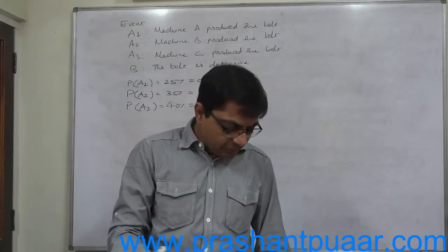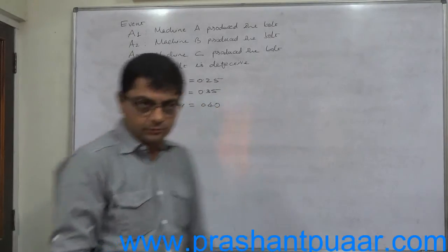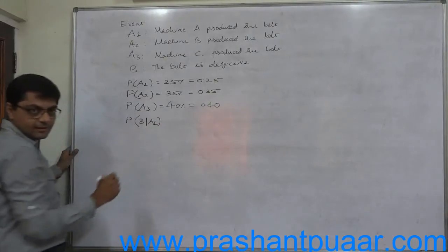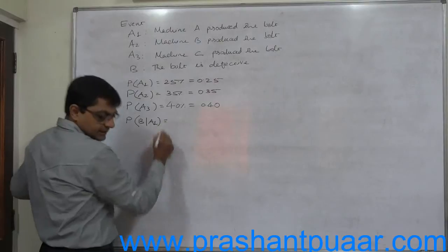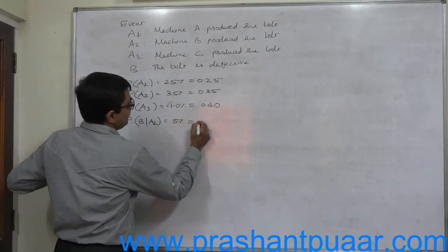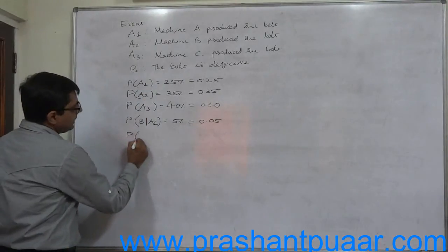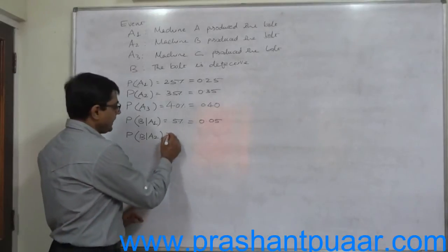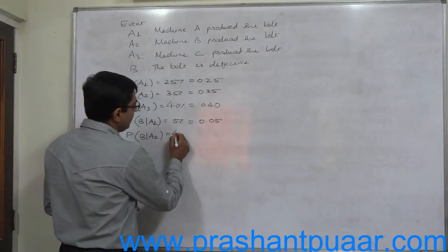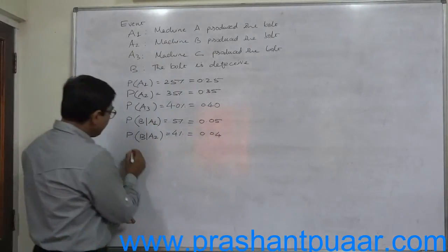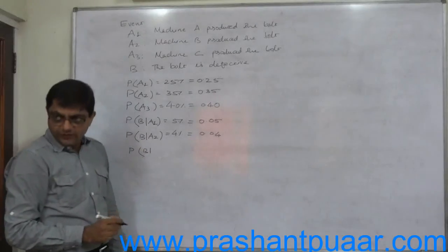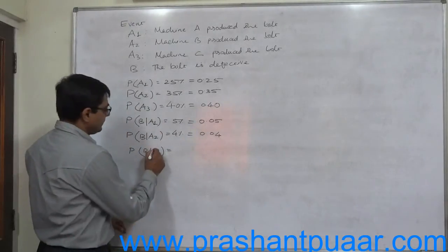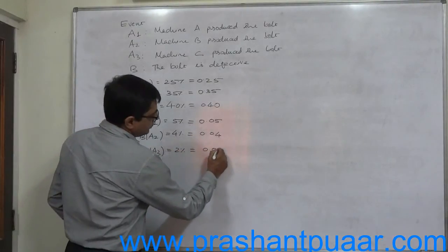Of their output, 5%, 4%, and 2% are defective. Probability of any bolt being defective if manufactured by machine A — that is P(B|A1) — equals 5%, so 0.05. Similarly, probability of any bolt being defective if manufactured by machine B, P(B|A2), is 4%, that means 0.04. And probability of any bolt being defective if manufactured by machine C, P(B|A3), is 2% or 0.02.